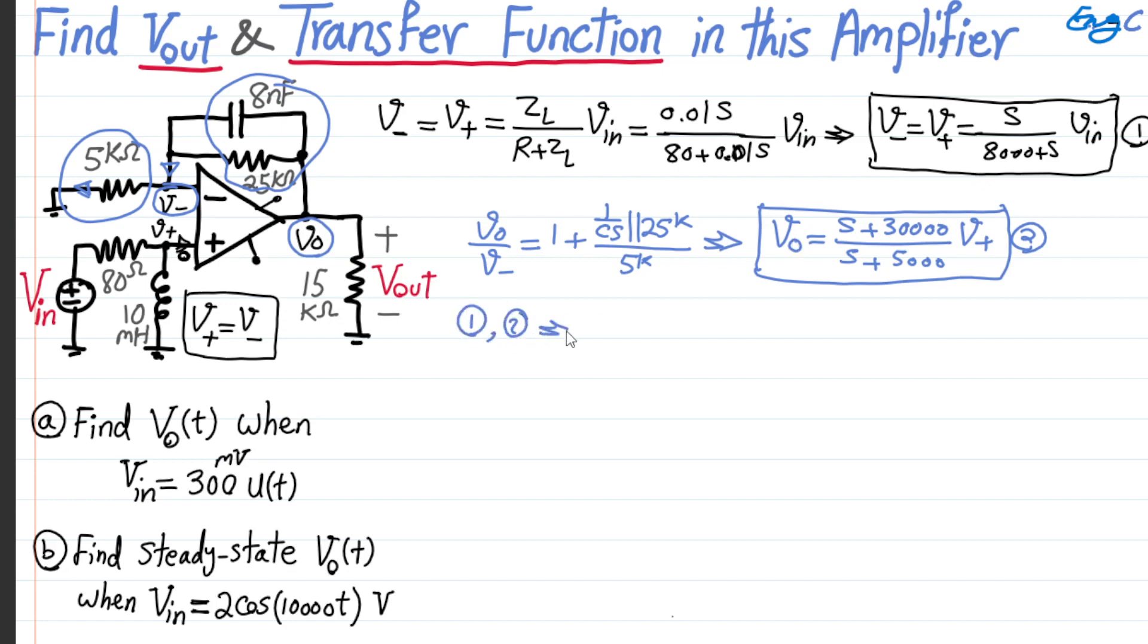What we get is S plus 30,000 divided by S plus 5,000 times V positive or V negative. So that's my equation number 2, and then we combined 1 and 2 together, because V positive can be related to Vin via this equation number 1. So, combination of 1 and 2, Vout is the final outcome that we are interested in, which means the transfer function of this linear circuit.